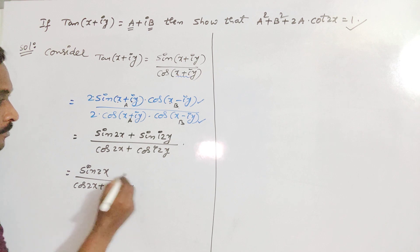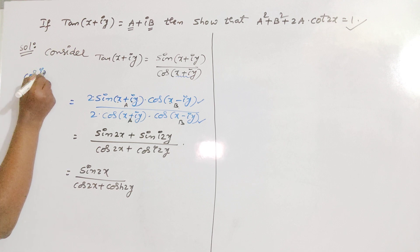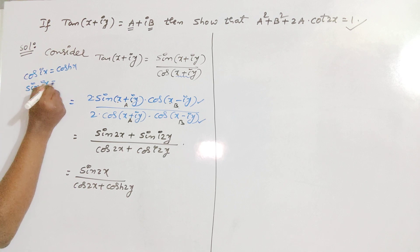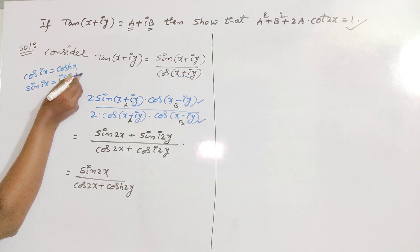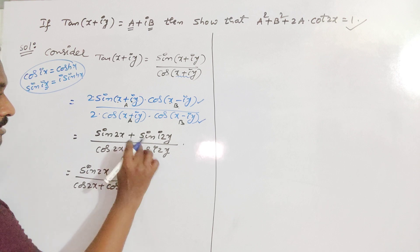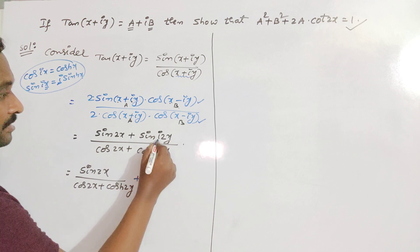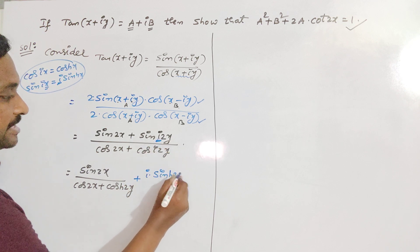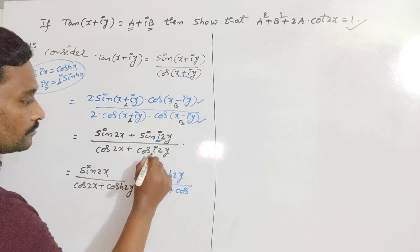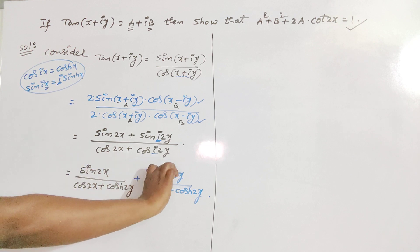The second term is written as sinh(2y). Already you know the identities: whenever we have cos(ix), we replace it by cosh(x); and whenever we have sin(ix), we replace it by i·sinh(x). So for sin(i·2y), we write i·sinh(2y) in the numerator divided by the denominator. So this is the real part, and this is the imaginary part.